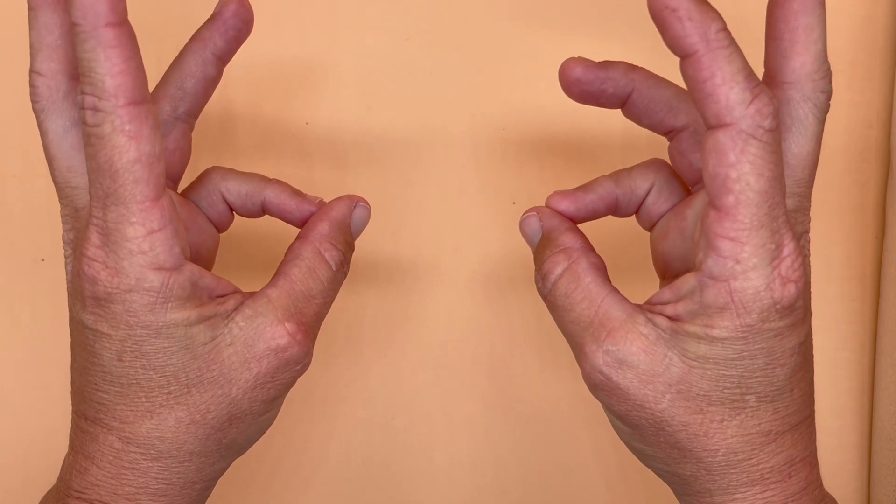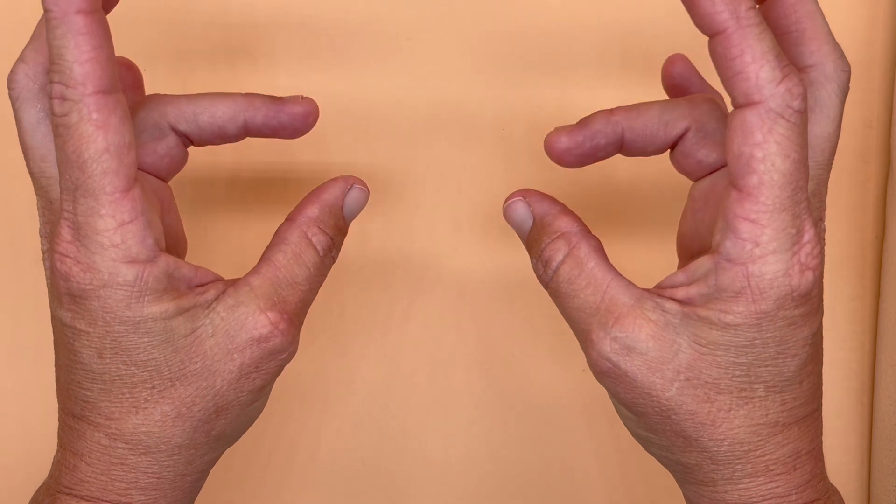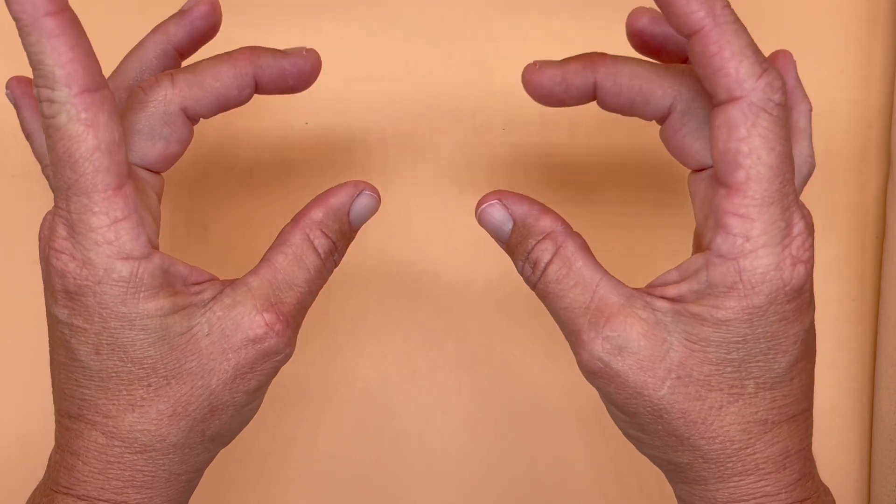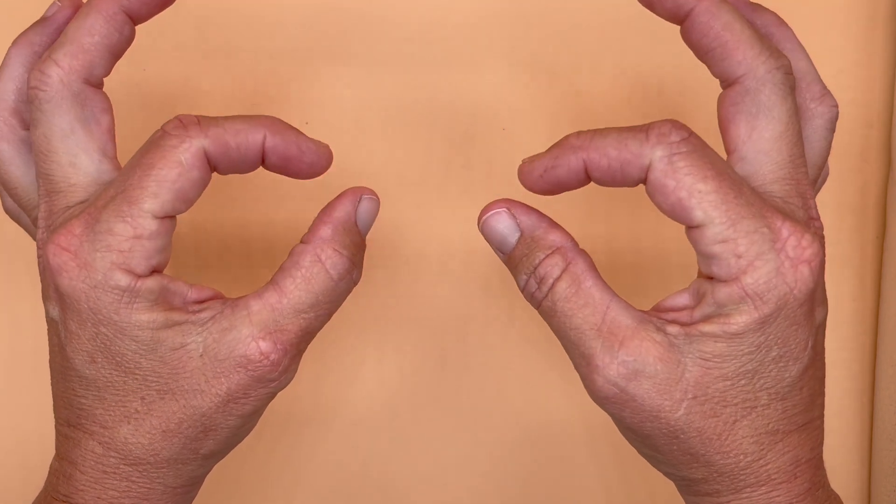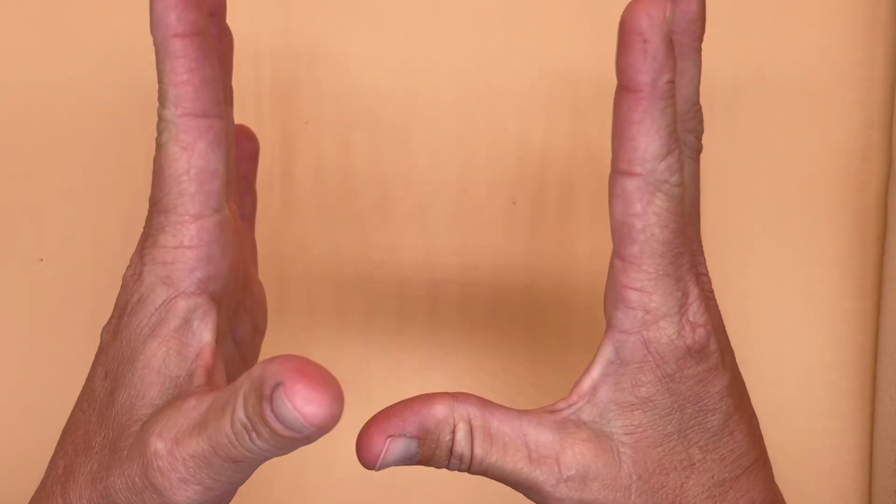pinky and thumb, and then we'll work backwards. So we'll do pinky and thumb again, ring finger, middle finger, pointer. But we'll be interlocking each time.